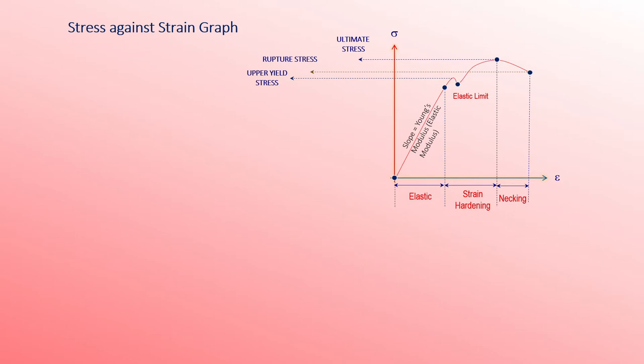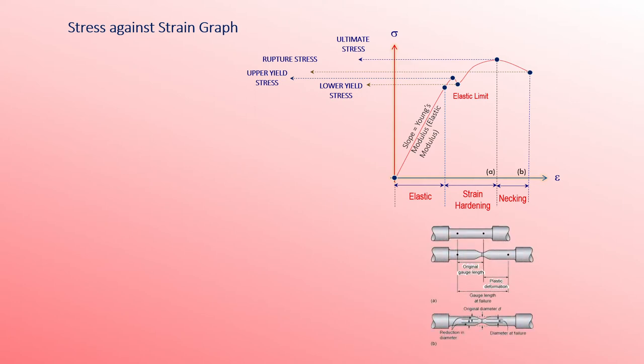Here we have a test specimen which undergoes a tensile test. The points marked initially represent the original gauge length. The second diagram shows plastic deformation where the length has increased. The third diagram shows necking and the reduced final diameter of the test specimen.